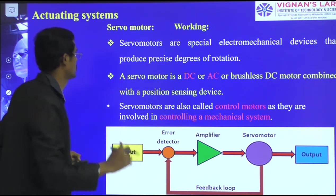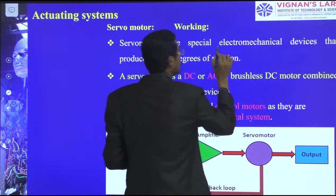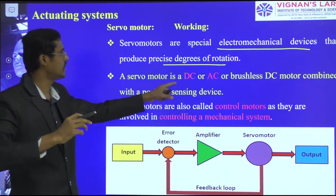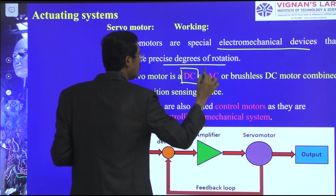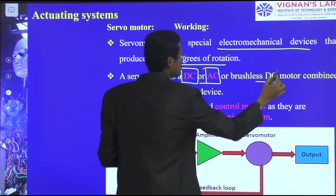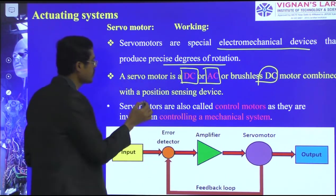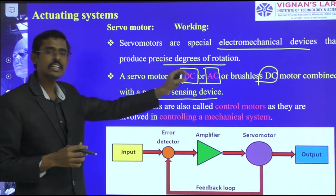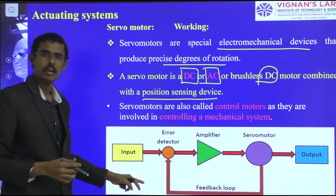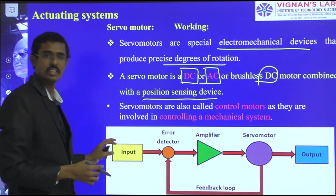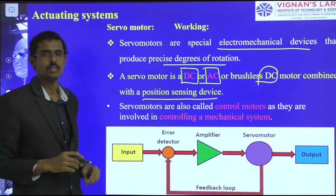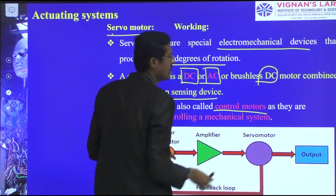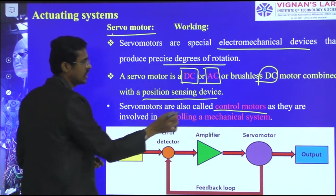Now we come to the servo motor. Having covered DC motors, AC motors, and stepper motors, the servo motor is a special electromagnetic device that produces a precise degree of rotation. It may be a DC motor, an AC motor, or a brushless DC motor, combined with position sensors. When it is connected to a feedback system under position sensors in a computerized mechatronics arrangement, we name it a servo motor. Servo motors are also called controllable motors and are involved in controlling mechanical actions.